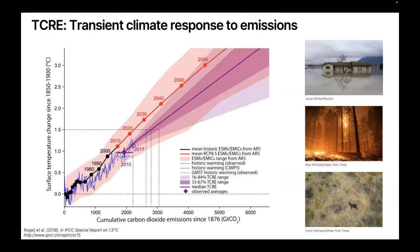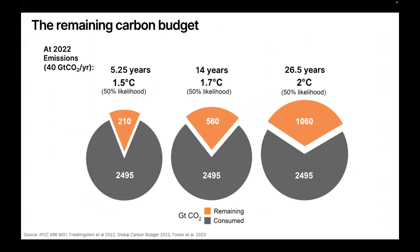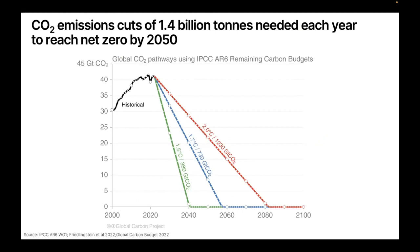Just to back up to the very beginning: the requirement for carbon dioxide removal stems from the fact that the change in Earth's climate is roughly linearly proportional to cumulative emissions. This is actually a pretty remarkable feature of the Earth's system. But what it implies is that we have a finite-term carbon budget — the amount of CO2 we can emit. Given this relationship of surface warming to cumulative emissions, to meet a 1.5°C target, we only have another 210 gigatons of CO2 to emit, and at 2022 emissions that's only about five years of time.